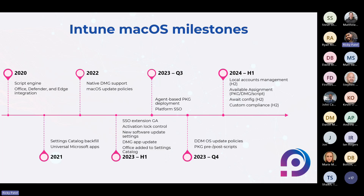Over the past years, Intune has made big strides in macOS management. In 2020 we saw key integrations like script engine and support for Office, Defender, and Edge. By 2021 we added the settings catalog for more granular control and support for universal apps catering for both Intel and Apple devices. In 2022, native DMG support and macOS update policies were introduced, and into 2024 we've seen agent-based PKG deployments and declarative device management for smoother updates.